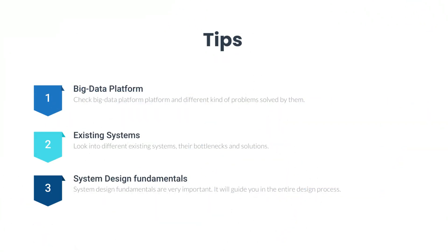A few things I would suggest that can be helpful for the system design interview process: talk to the interviewer while you draw the diagram — that way you will be more in sync with the interviewer, and if you are going out of scope then the interviewer can correct you. Draw diagrams with simple boxes. The most effective diagrams are ones that clearly explain your vision with minimal ambiguity. Your focus should be on simplicity, thoroughness and cleanliness. It is said it takes a deep understanding of something to explain it simply — so it is up to you how effectively you can communicate your ideas and convince the interviewer.